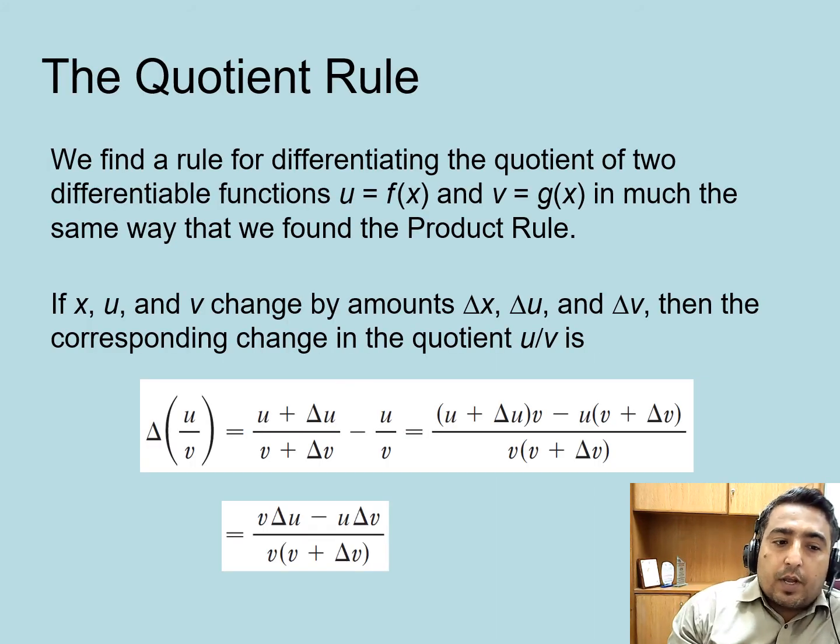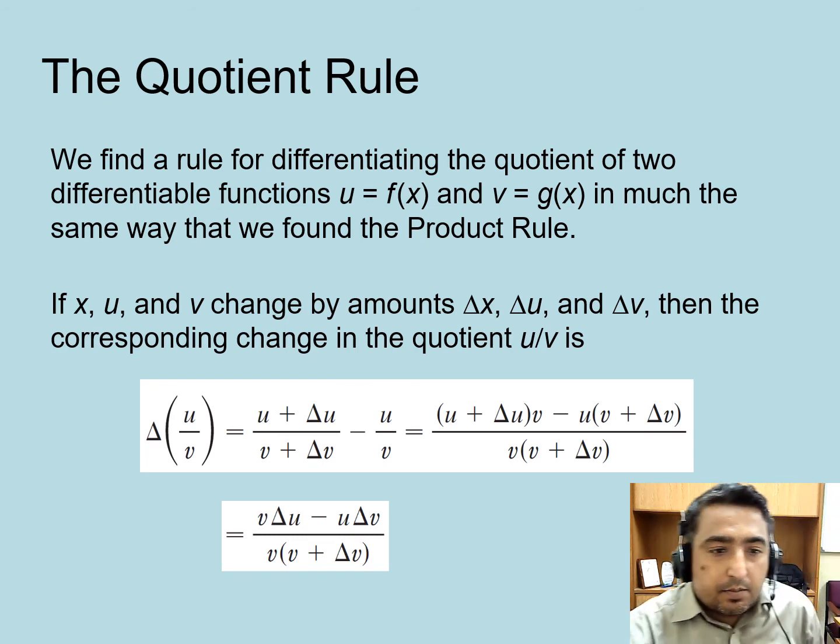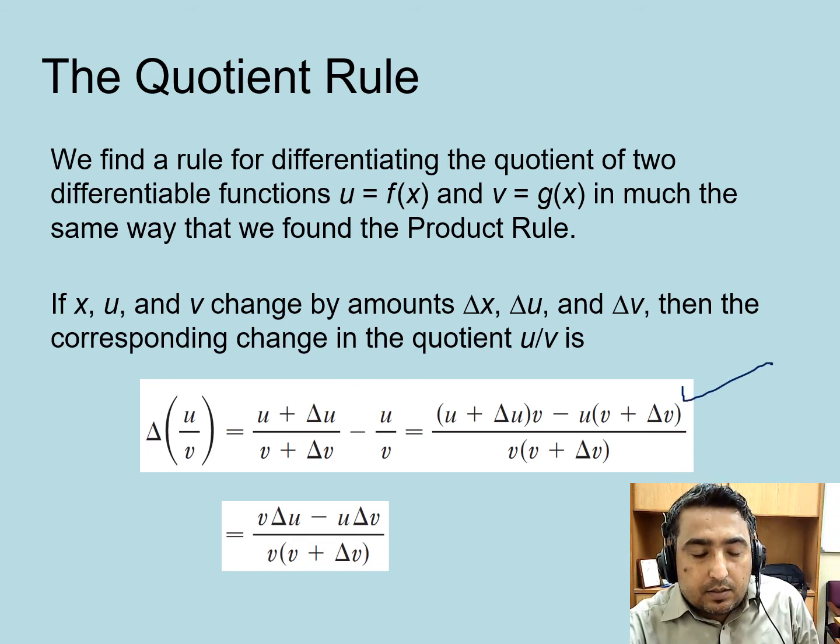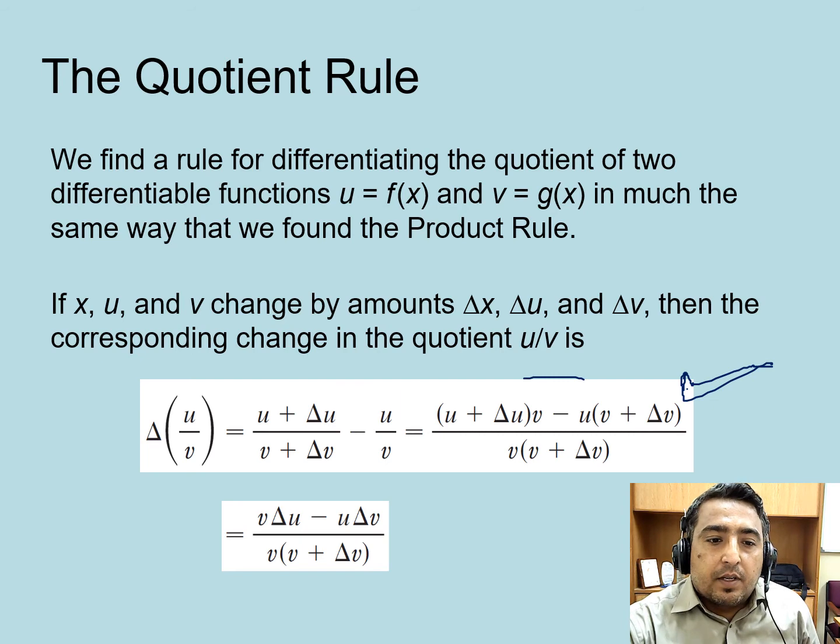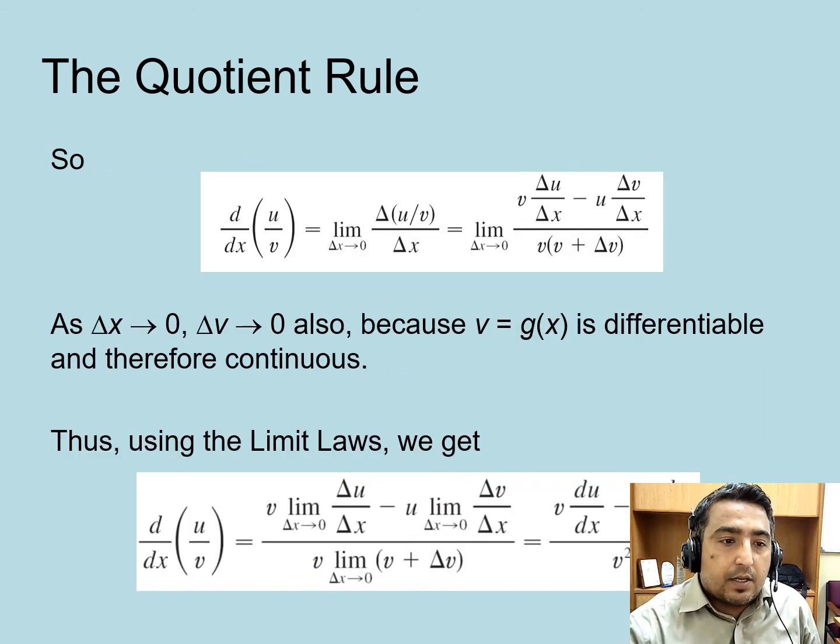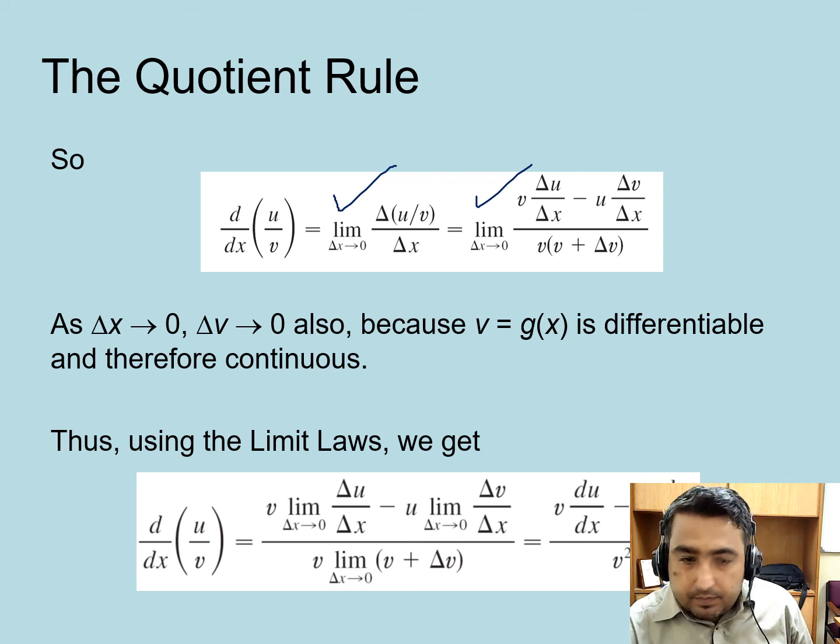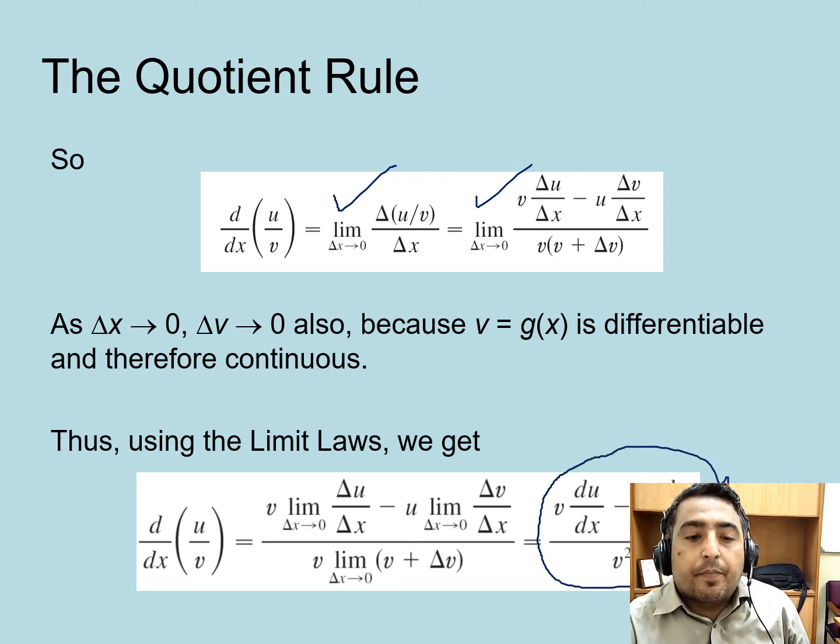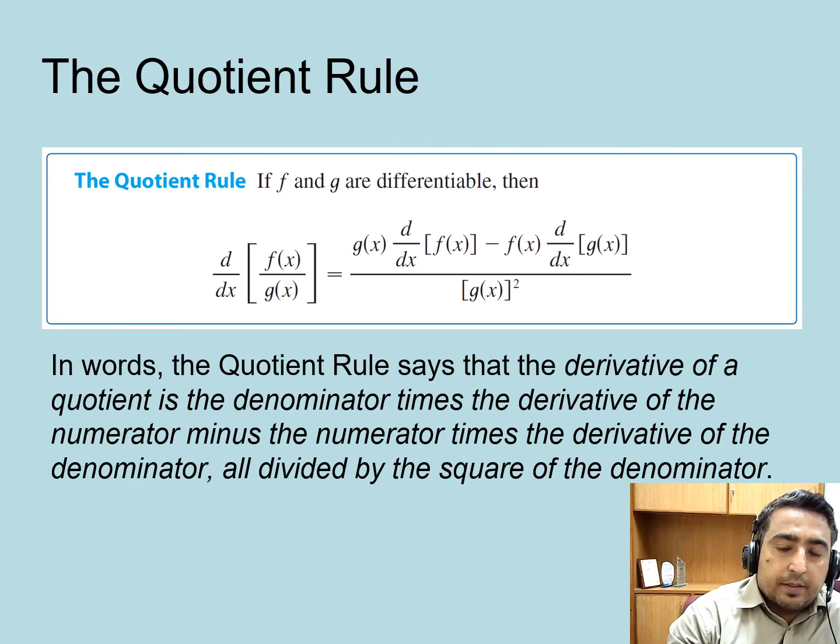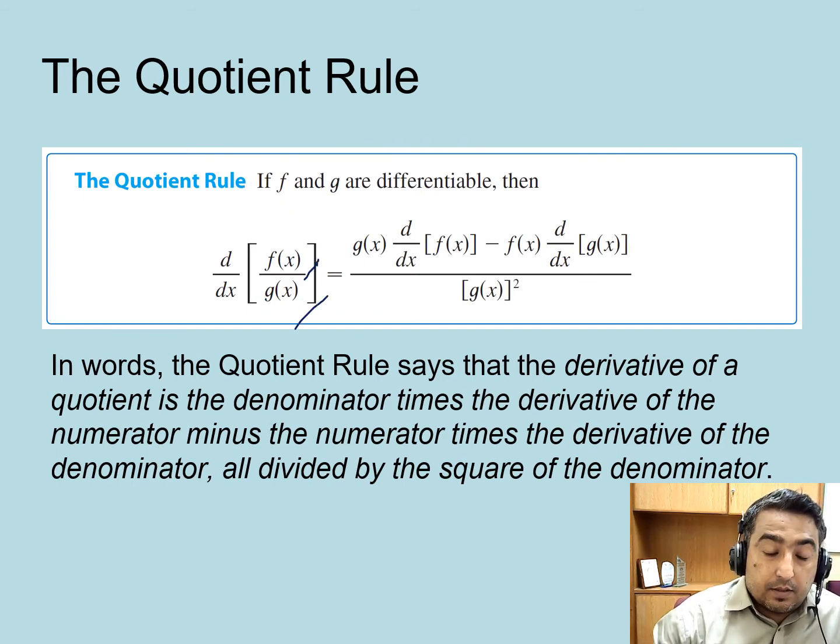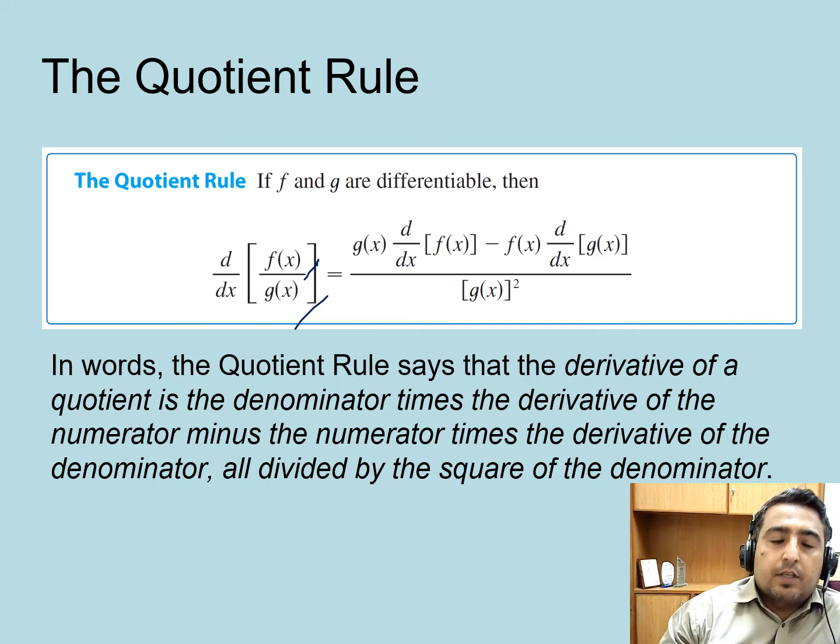For the quotient rule, I'm skipping the detailed derivation, but I want to mention this uses the basic definition of differentiation—the epsilon-delta definition with the quotient and the limiting case. It ends up with this formula: if y = u/v, then y' = (u'v - uv')/v².